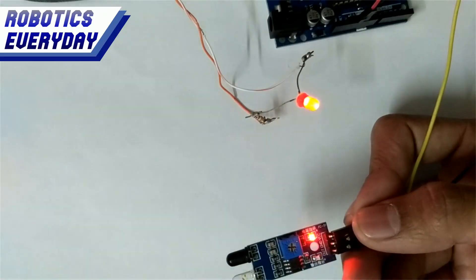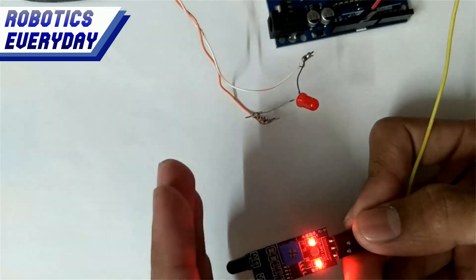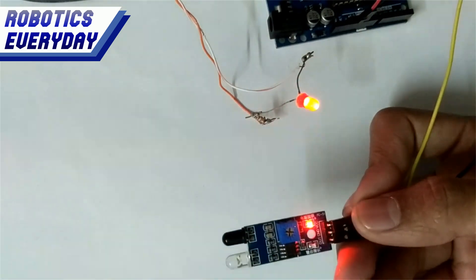This is an infrared sensor-based object detector. It detects any object within a specific range of the sensor and blinks the LED to indicate the object's presence. Let's see how.